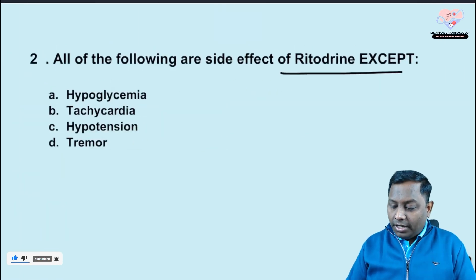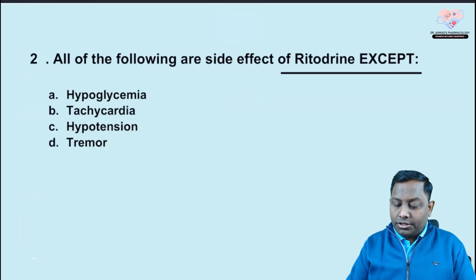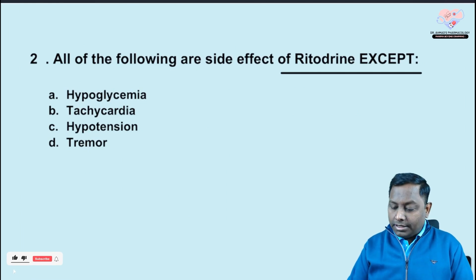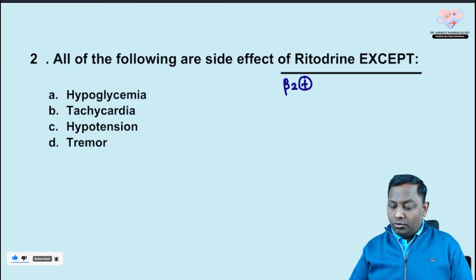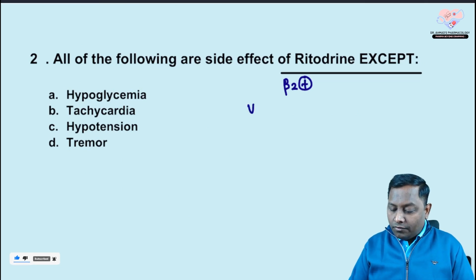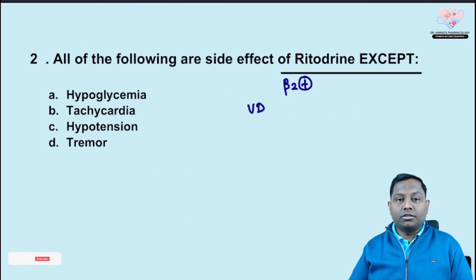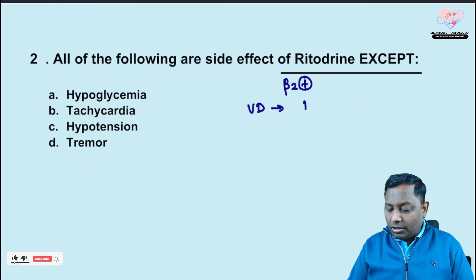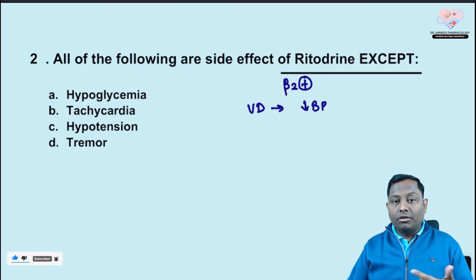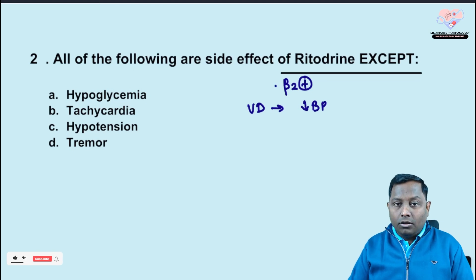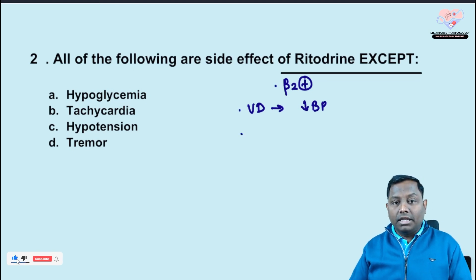The next question: which of the following is a side effect of ritodrine except? You should first know which class of drug ritodrine is. Ritodrine is a beta-2 agonist. As a beta-2 agonist, it causes vasodilation, which can lead to a fall in blood pressure. A fall in blood pressure can also lead to reflex tachycardia.